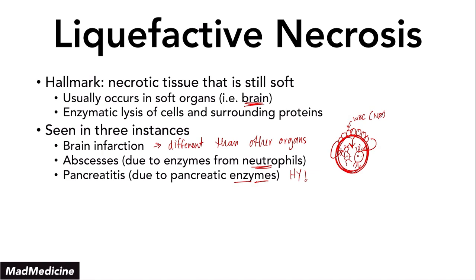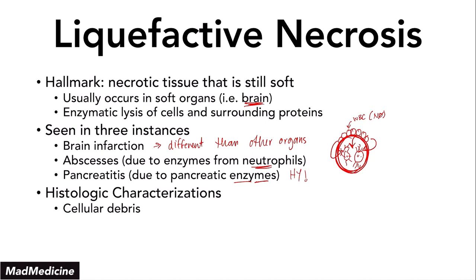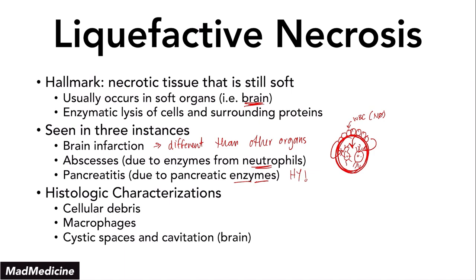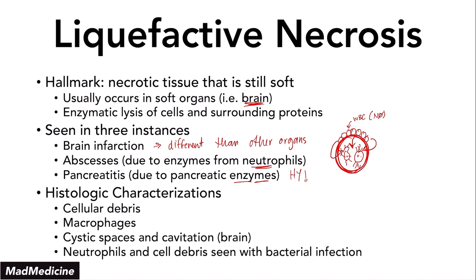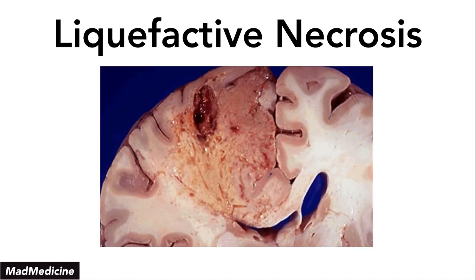When it comes to histology, in liquefactive necrosis you're going to see cellular debris, a lot of macrophages, as well as cystic spaces and cavitations in the brain. When talking about abscesses, you're going to see neutrophils and cell debris along with the bacterial infection. Now I'm going to show you a gross histology slide of the brain for liquefactive necrosis — if you look carefully, you can actually see a lot of the concepts we just spoke about.